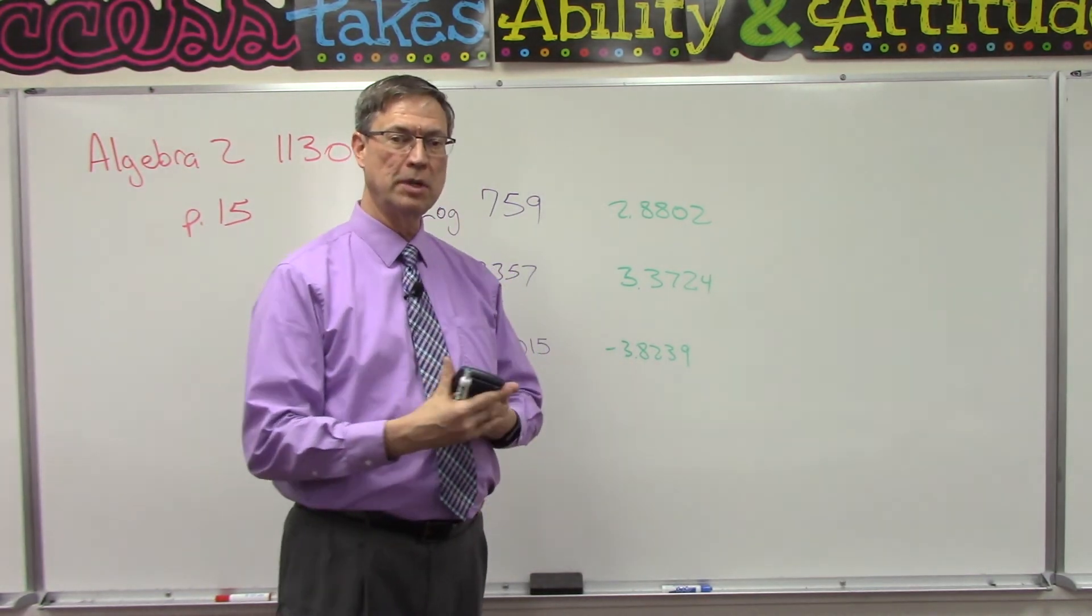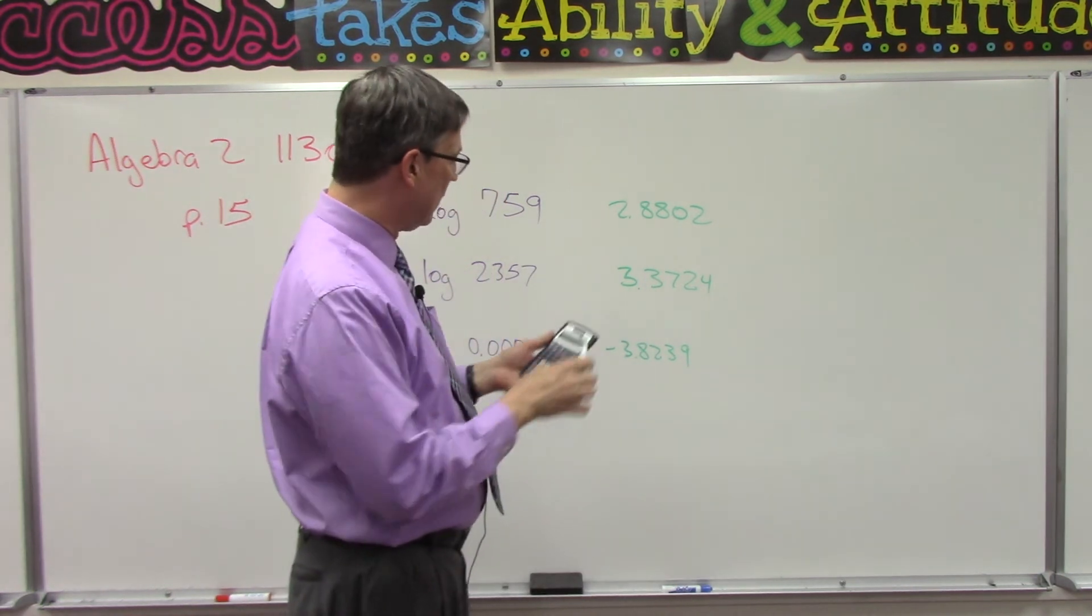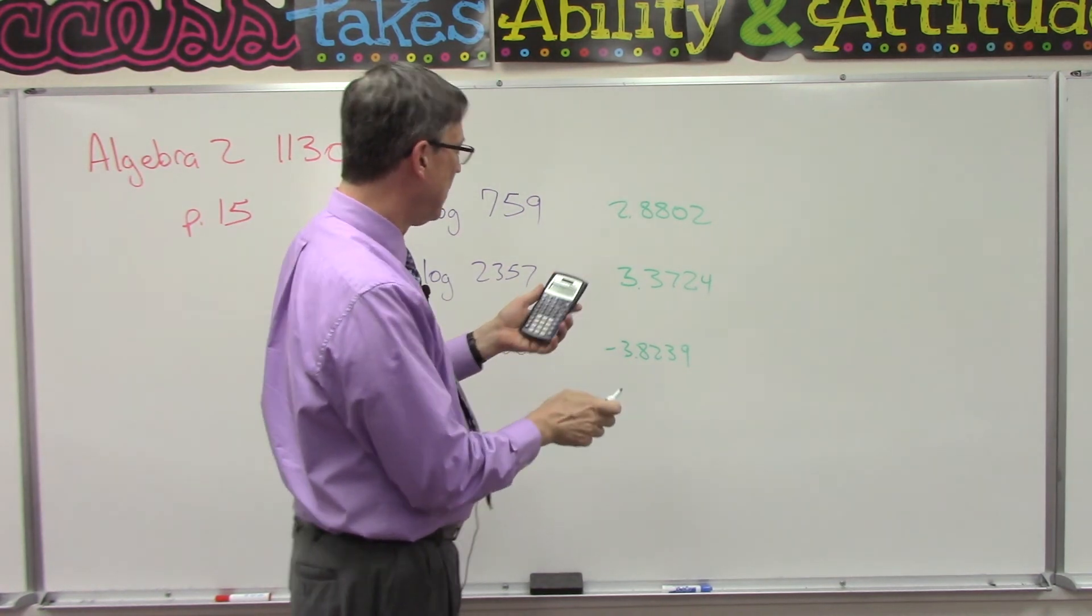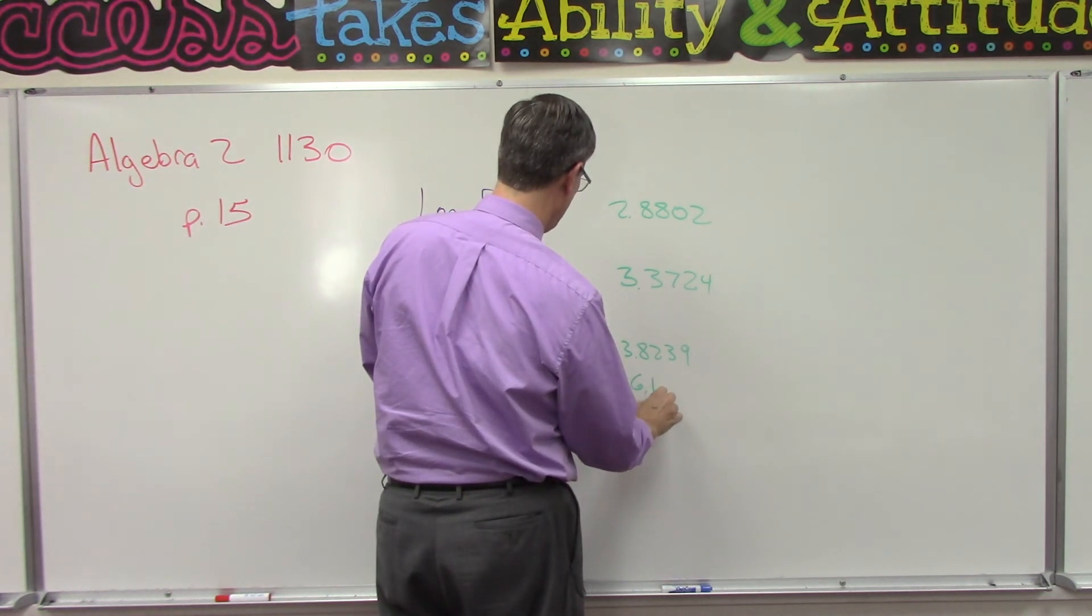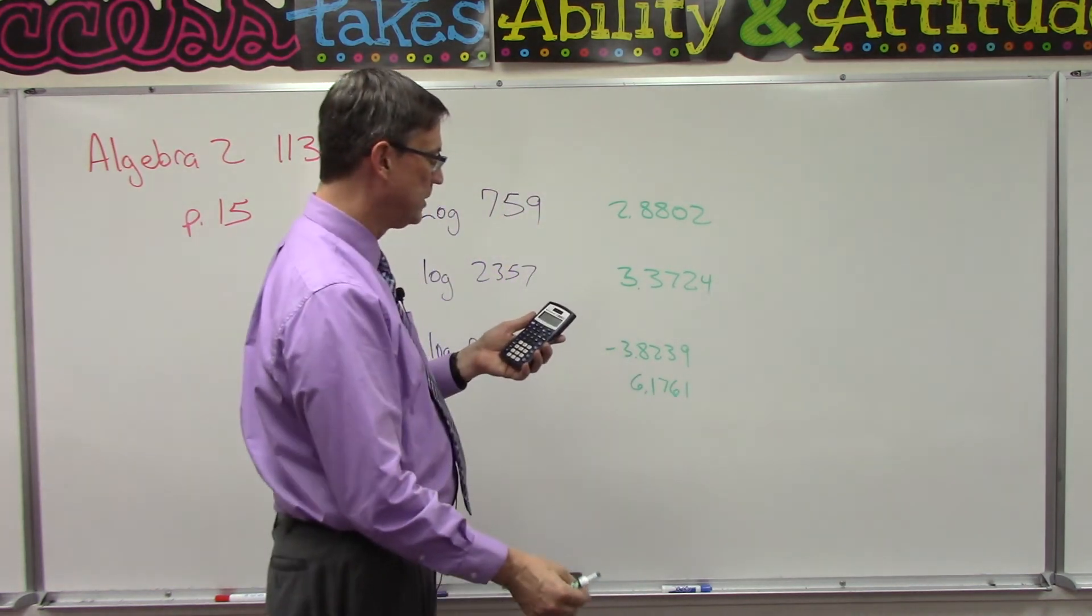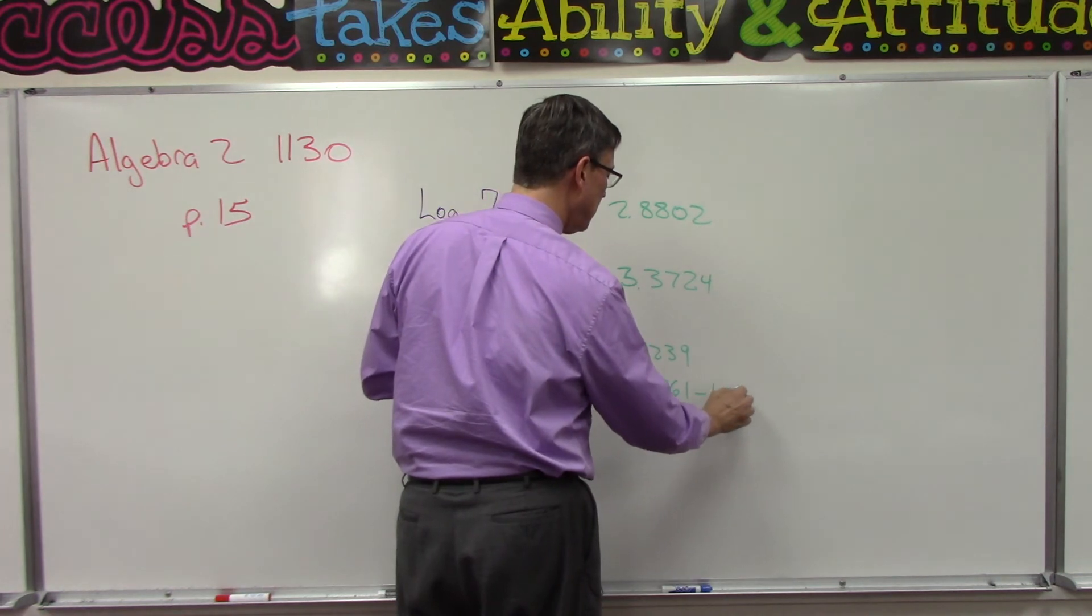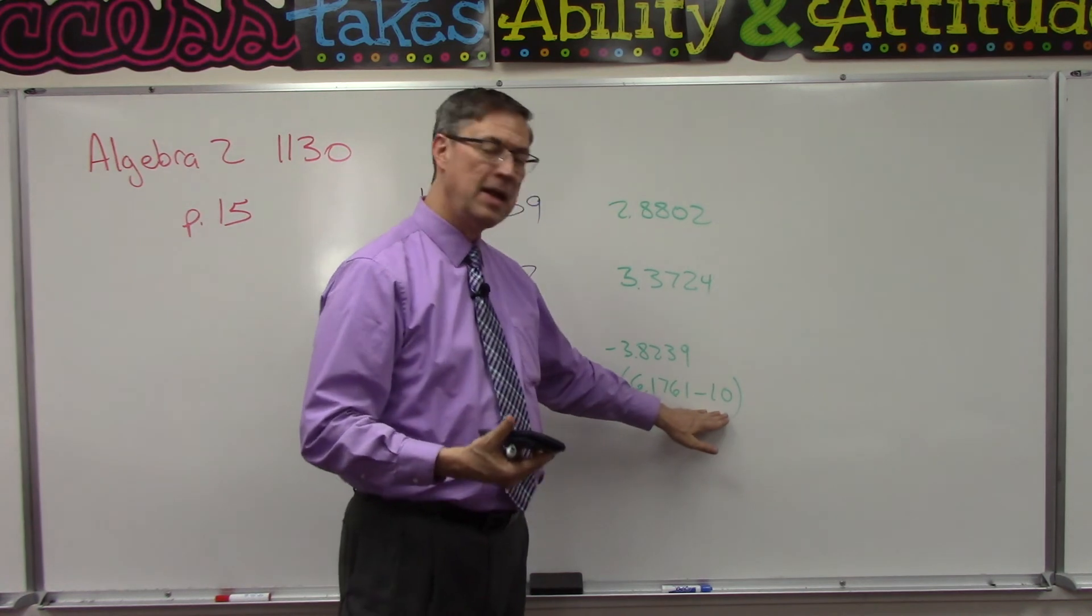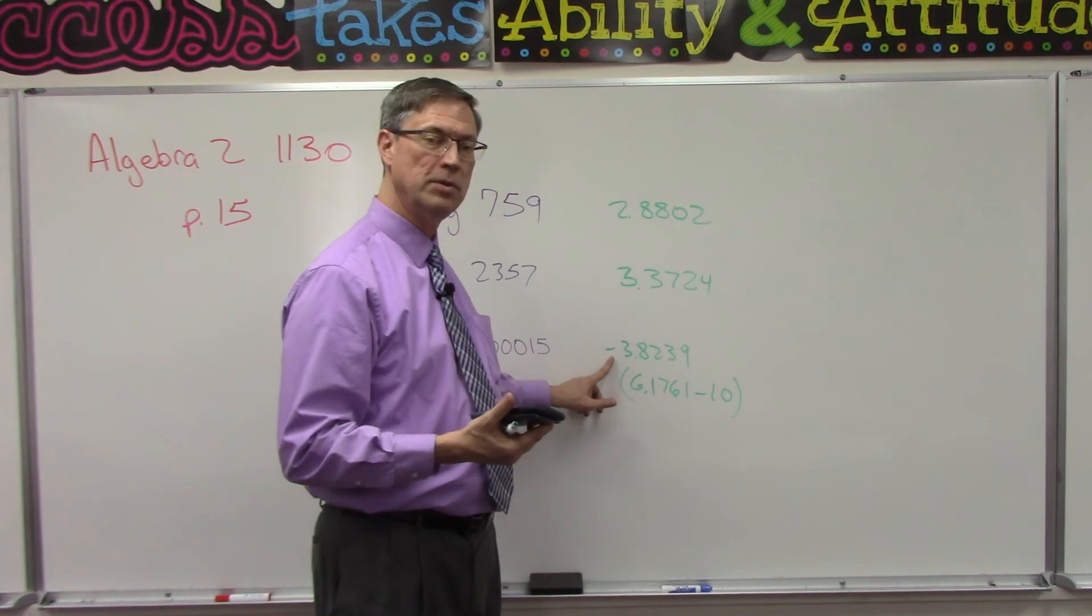If you do plus 10, and that would give me 6.1761. By adding 10, in the score key this is the way they write the answer: 6.1761 minus 10, and they leave the answer like that. They don't solve that out to get the negative as the answer.